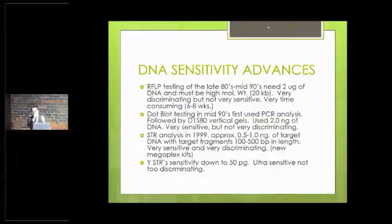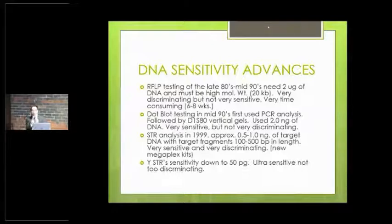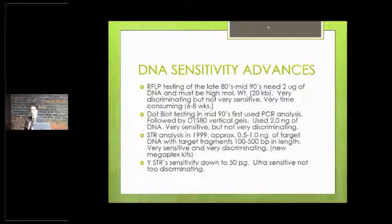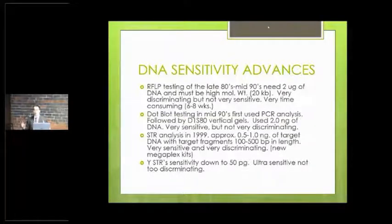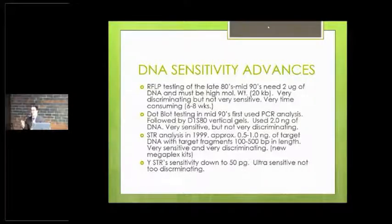PCR stands for polymerase chain reaction. What we can do is start out with, theoretically, a single copy of target DNA that we're looking at, and through this PCR process we can make copies of it — just like a photocopy machine. Start out with one copy, two, four, eight, 16, 32. By the time we're through 30 cycles with this instrument, we have between a million and a billion times more of that DNA than what we started with. That's really the power of it.